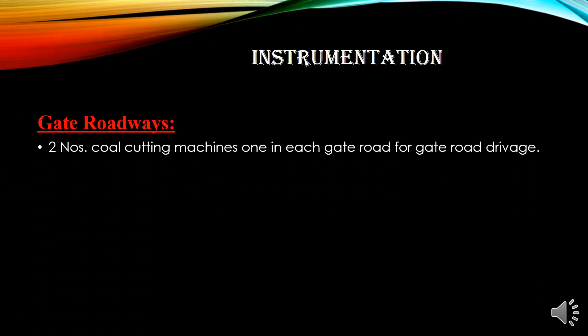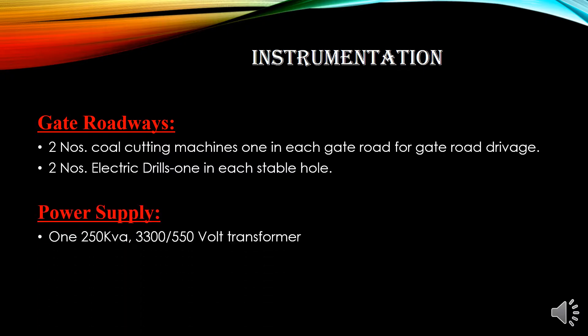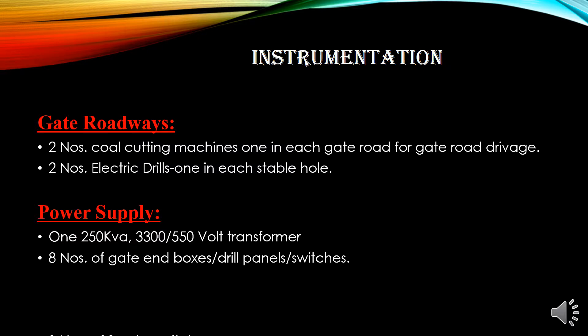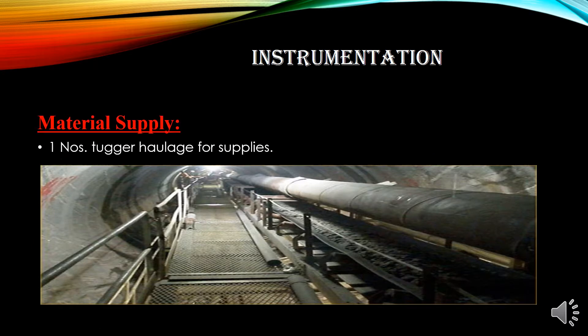Gateway road equipment included 2 coal cutting machines, one in each gate road for gate road drivage; 2 electric units, one in each gate road for power supply rated at 50 kilowatt-ampere; a 3300/550 volt transformer; 8 gate end box drill panels and switches; and 1 feeder switch. For material supply, a tugger haulage for suppliers was used.